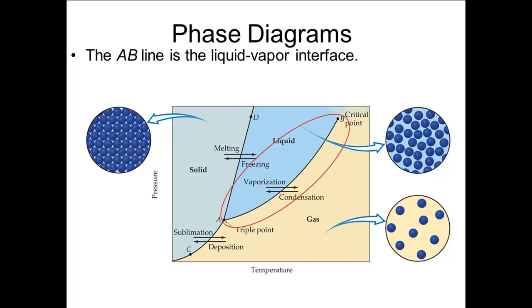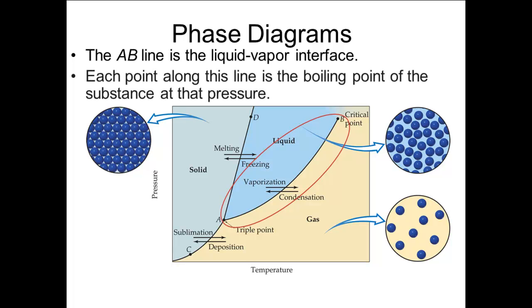The line AB is the vapor pressure line for the liquid. On this line, the liquid and gas states are in equilibrium. Each point on this line is the temperature at which the liquid boils under that particular external pressure. That is why it is also called the boiling point line.